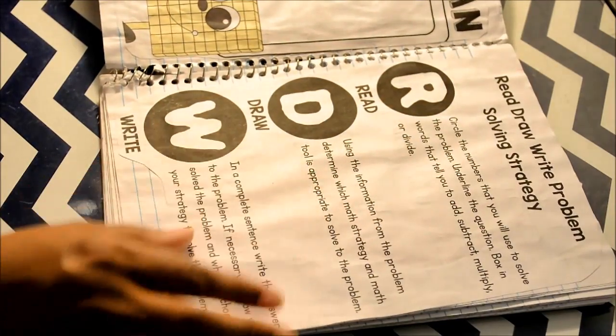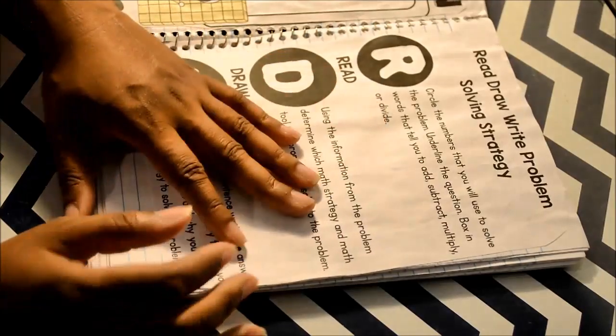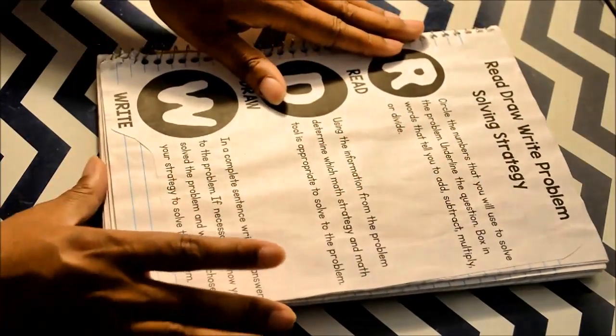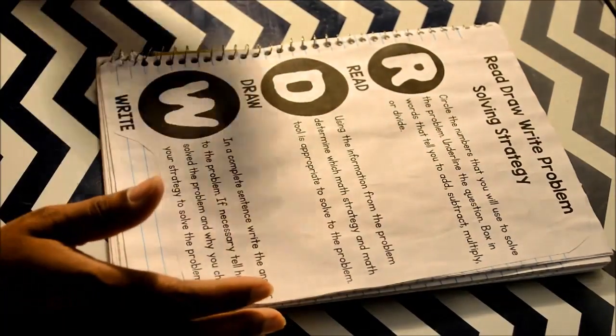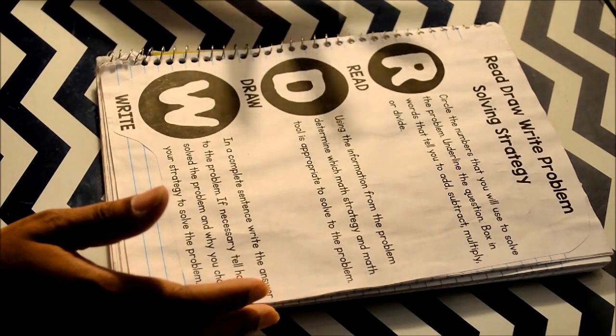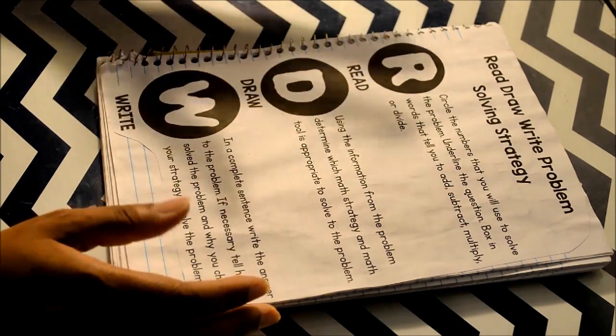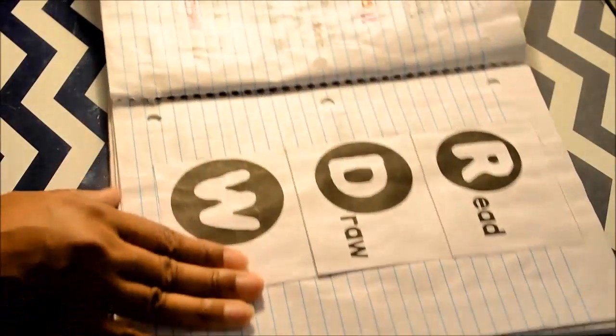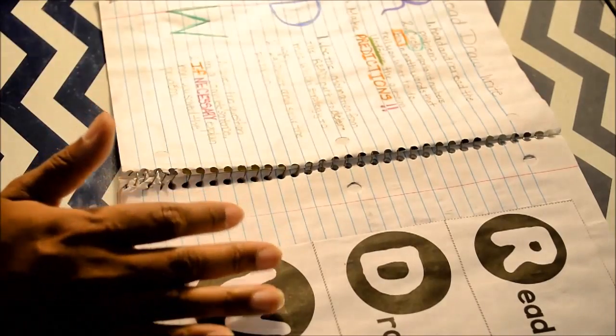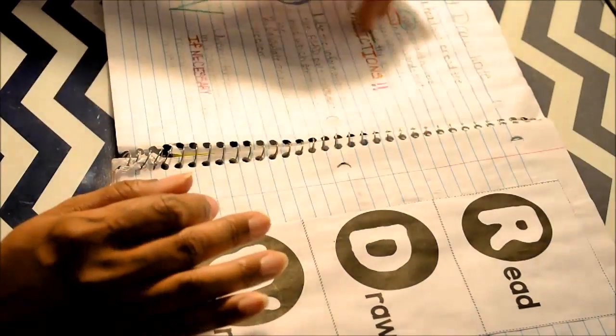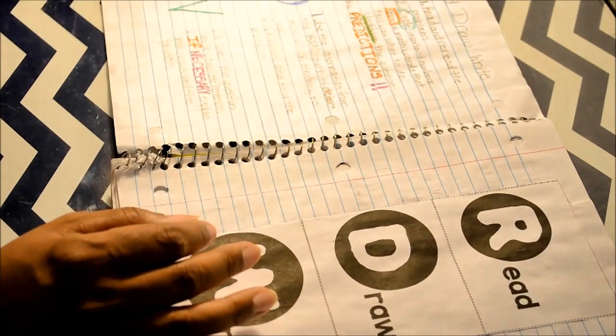After that, I input red-yellow-green light problem solving strategy. And this is important because we use this all year. And it's a reference point. And it introduces them to the problem solving strategy where the children may not have had it in the previous grade level.